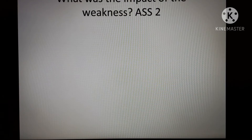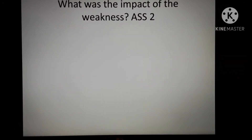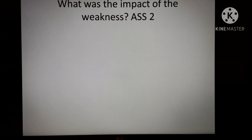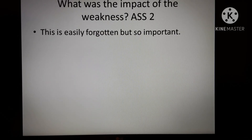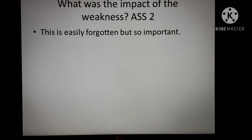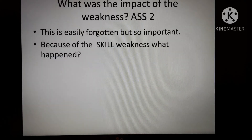This is the bit the exam board really want you to focus on — what was the impact of the weakness? What happened because of the weakness? What happened in terms of the outcome of that phase of play — not necessarily the end result, but in that moment, what happened because of the weakness? Make sure you relate that in this section. It's actually quite easy to do because you can see what the impact was — the other team got five metres of territory, your team had to retreat into defence. It might be as simple as the player you were marking got free and was able to score.